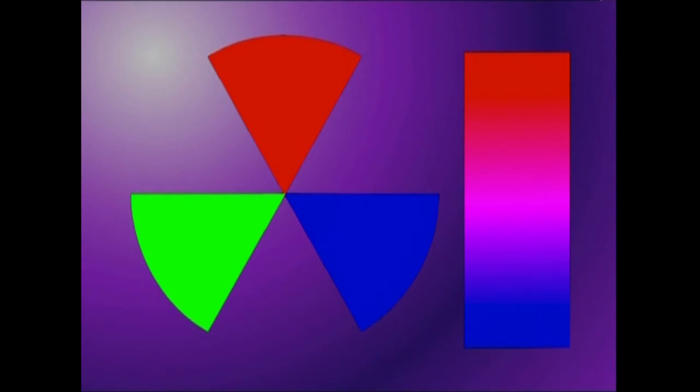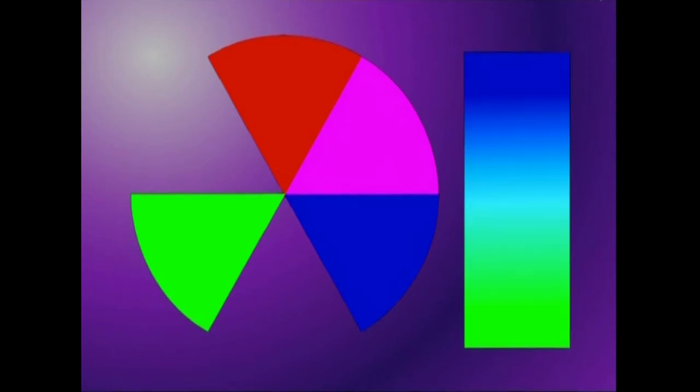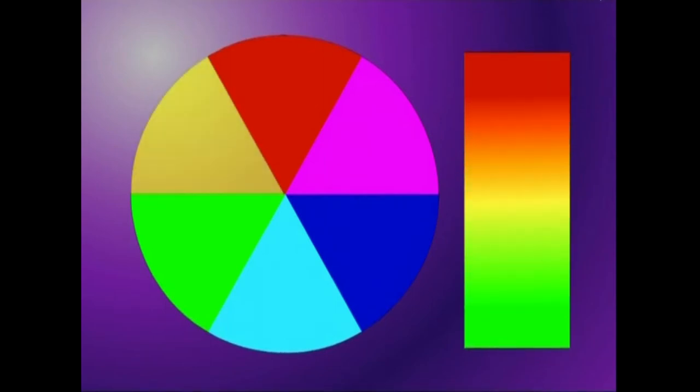Kolore osagarri bakoitza, bi kolore primarioaren nahasketatik sortzen da. Beraz, gorria eta urdina nahasten baditugu, magenta lortuko dugu. Urdina eta berdea nahastuzkero, ziana. Eta berdea eta gorria nahastuta, horia.